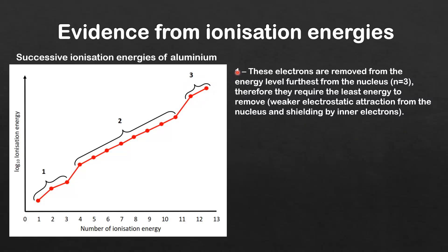For band one, these electrons are removed from the energy level furthest from the nucleus (n=3). Therefore, they require the least energy to remove because of the weaker electrostatic attraction from the nucleus and shielding by inner electrons.